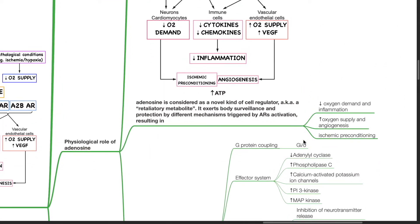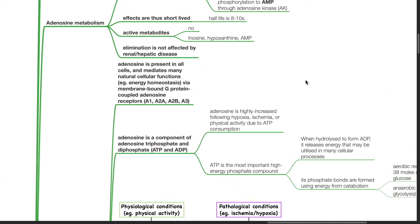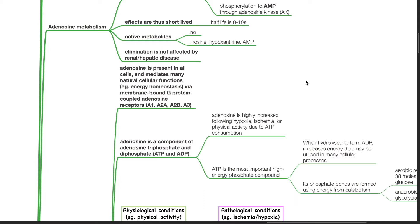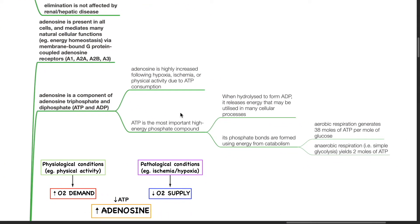Physiological role of adenosine: Adenosine is present in all cells and mediates many natural cellular functions such as energy homeostasis via membrane-bound G-protein-coupled adenosine receptors A1, A2A, A2B, and A3. Adenosine is a component of adenosine triphosphate and diphosphate. Adenosine is highly increased following hypoxia, ischemia, or physical activity due to ATP consumption.